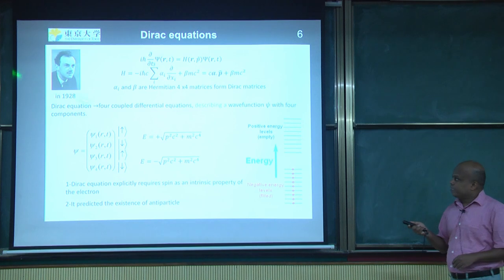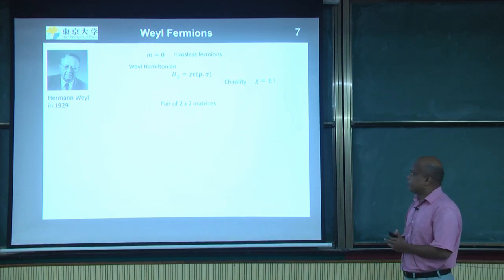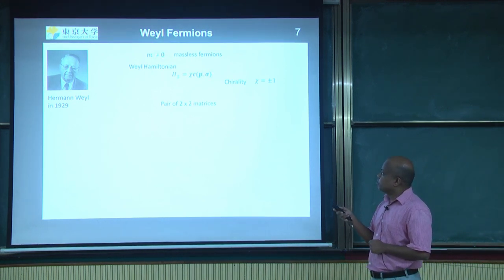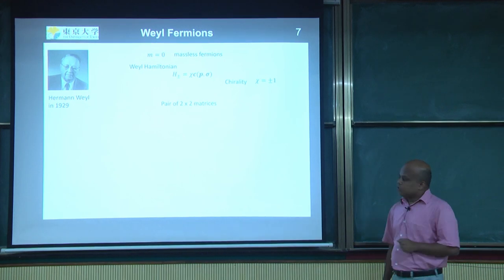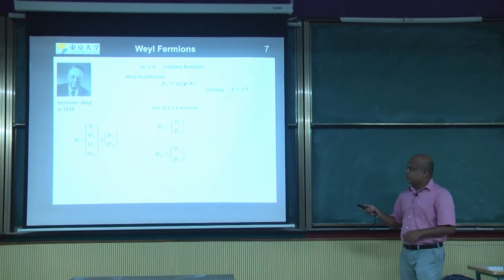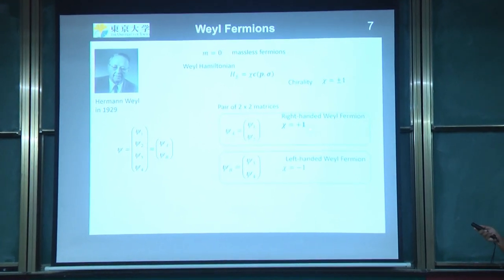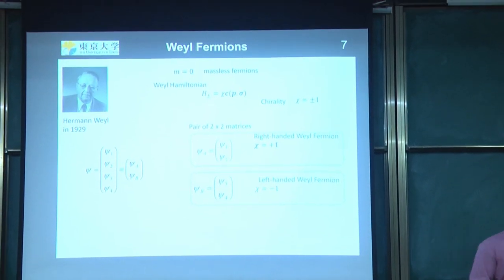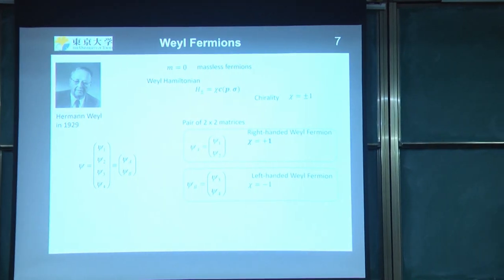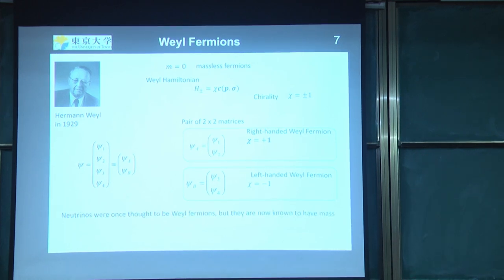This equation was derived in 1928 by Paul Dirac. The next year, Hermann Weyl solved the same equation but with the mass term set to zero. In this case, he could simplify the Hamiltonian into a 2×2 matrix with a chirality term. The 4-component spinor splits into two 2-component spinors, each representing a Weyl fermion — one with positive chirality and one with negative chirality. People tried to find the Weyl fermion as an elementary particle for a long time. Initially the neutrino was thought to be one, but it was later found to have mass, so it is not a Weyl fermion.